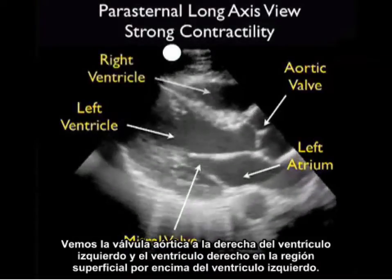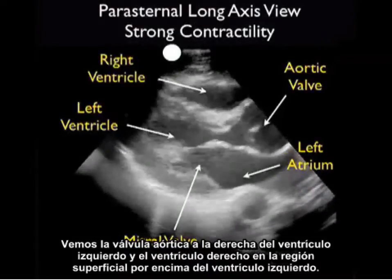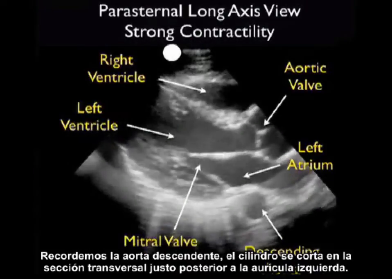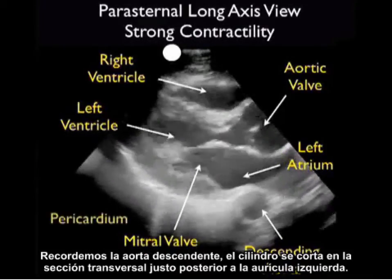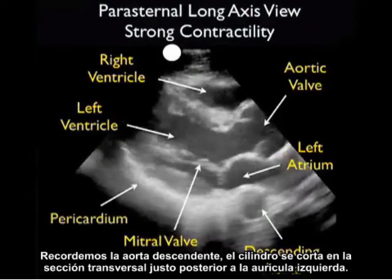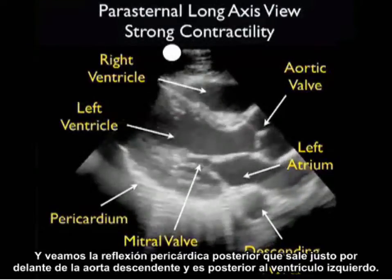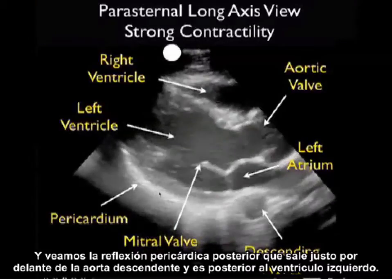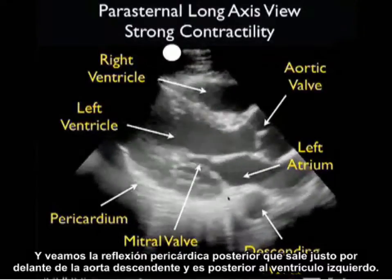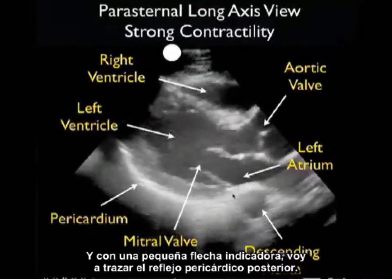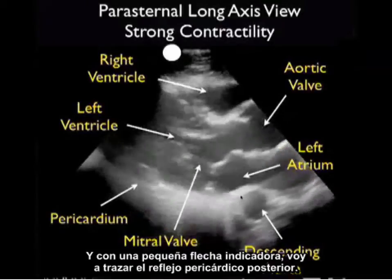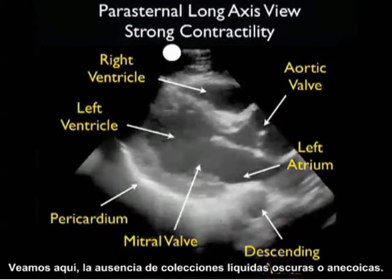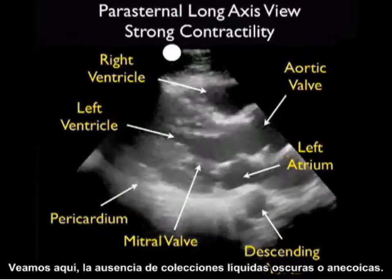We see the aortic valve to the right of the left ventricle and the right ventricle in a superficial location above the left ventricle. Recall the descending aorta — the cylinder cut in cross section just posterior to the left atrium — and note the posterior pericardial reflection coming off just anterior to the descending aorta and posterior to the left ventricle. With a small indicator arrow I'll trace out the posterior pericardial reflection, noting the absence of any dark or anechoic fluid collections.